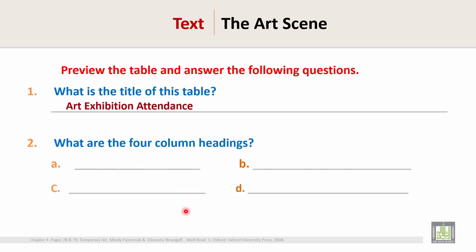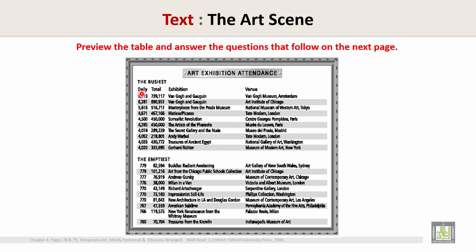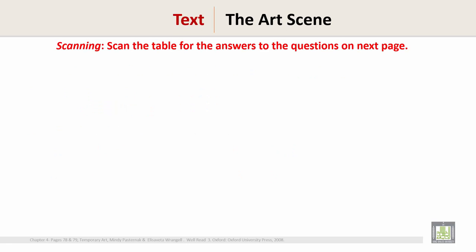The four column headings are: Daily, Total, Exhibition, and Venue. Now write in: A — Daily, B — Total, C — Exhibition, and D — Venue. Now we will scan the table for the answers to the questions on the next page.